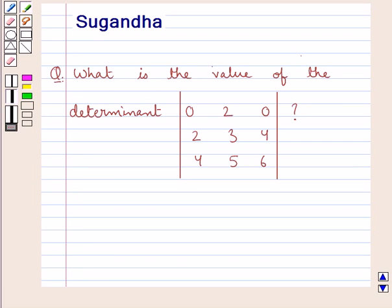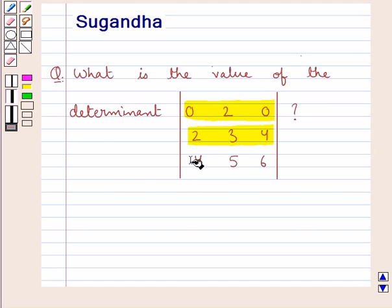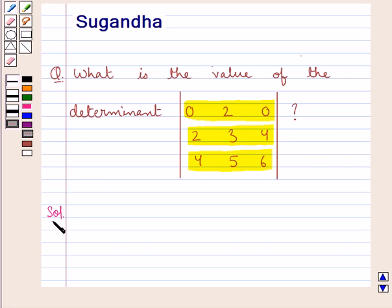Hello and welcome to the session. In this session we discuss the following question: What is the value of the determinant with elements in the first row as 0, 2, 0; in the second row as 2, 3, 4; and in the third row as 4, 5, 6? Let's proceed with the solution now.